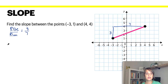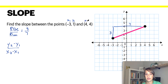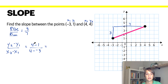The second way to do it is using the slope formula, which is y2 minus y1 over x2 minus x1. If this is x1 and this is y1, this would be x2 and this would be y2. So to use the formula, you would be 4 minus 1 on top divided by 4 minus a negative 3 on bottom. 4 minus 1 is 3, and then 4 minus a negative 3 gives you 7 because two negatives give you a positive number.